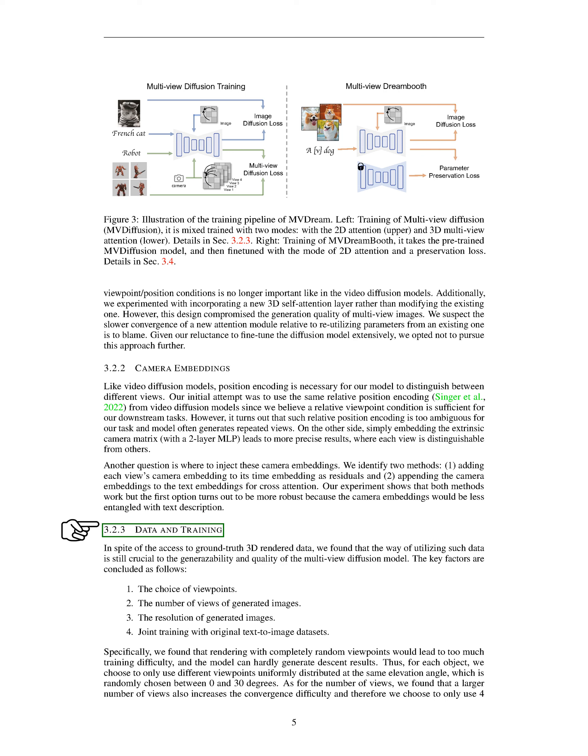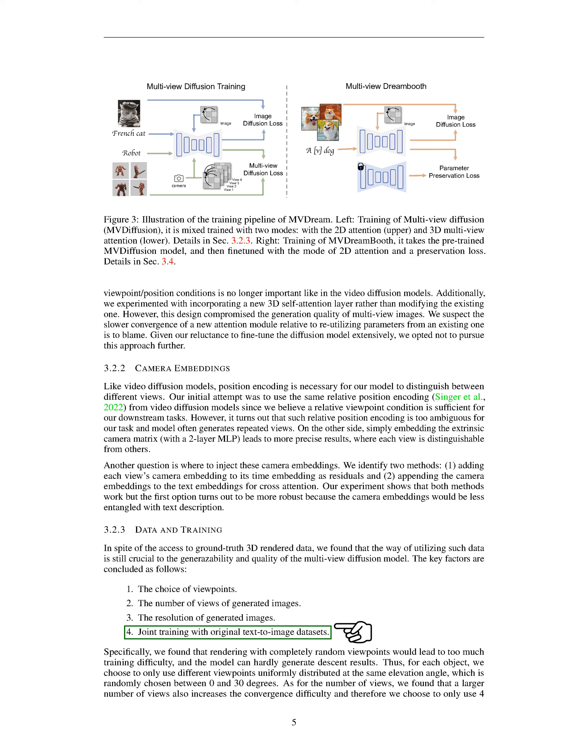Despite having access to ground truth 3D rendered data, how we used this data was crucial to the quality and generalizability of the multi-view diffusion model. We identified four key factors: the choice of viewpoints, the number of views, the resolution of generated images, and joint training with original text-to-image datasets. We discovered that rendering with completely random viewpoints made training too difficult, so for each object we chose different viewpoints uniformly distributed at the same elevation angle, randomly chosen between 0 and 30 degrees. Regarding the number of views, we found that more views made convergence more difficult, so we decided to use only four views for the current models.